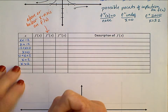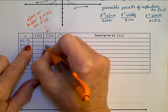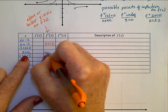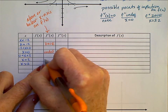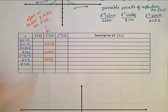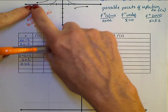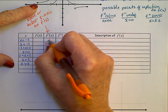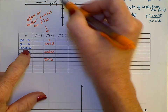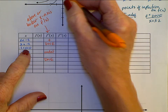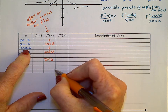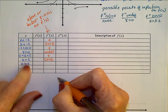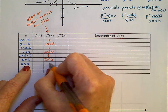At negative 2 we have does not exist, at 0 an undefined, and another does not exist at x equals 2. When x is less than negative 2, f prime is positive. Between negative 2 and 0, f prime is positive — above the x-axis. For x between 0 and 2, f prime is positive, and for x greater than 2, f prime is negative.